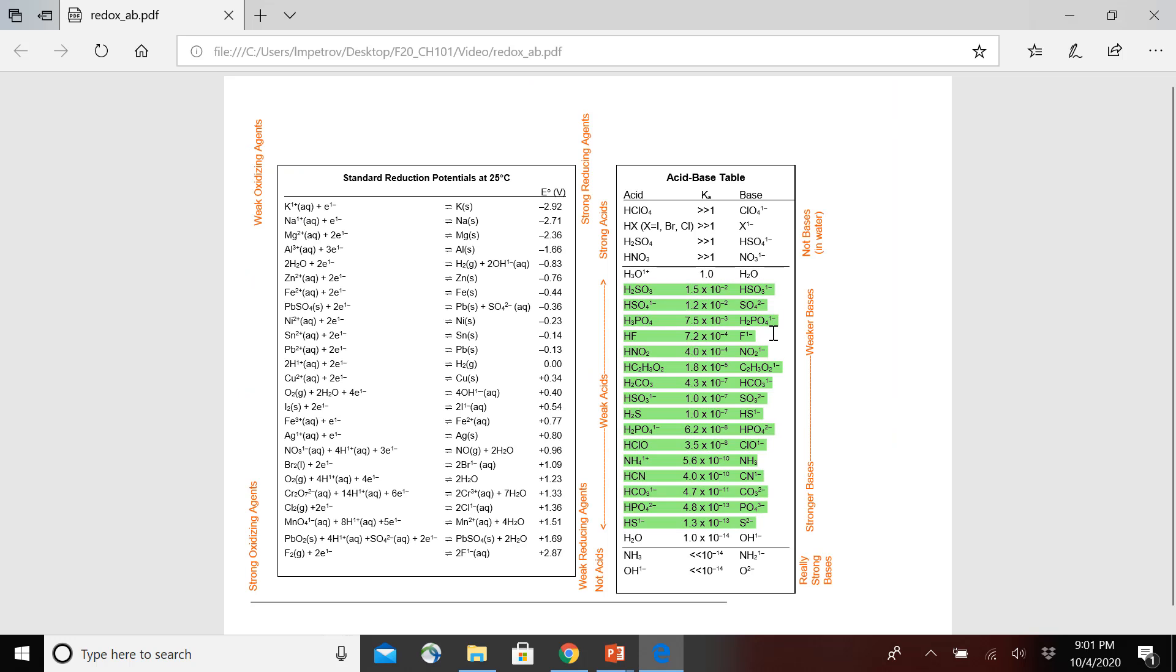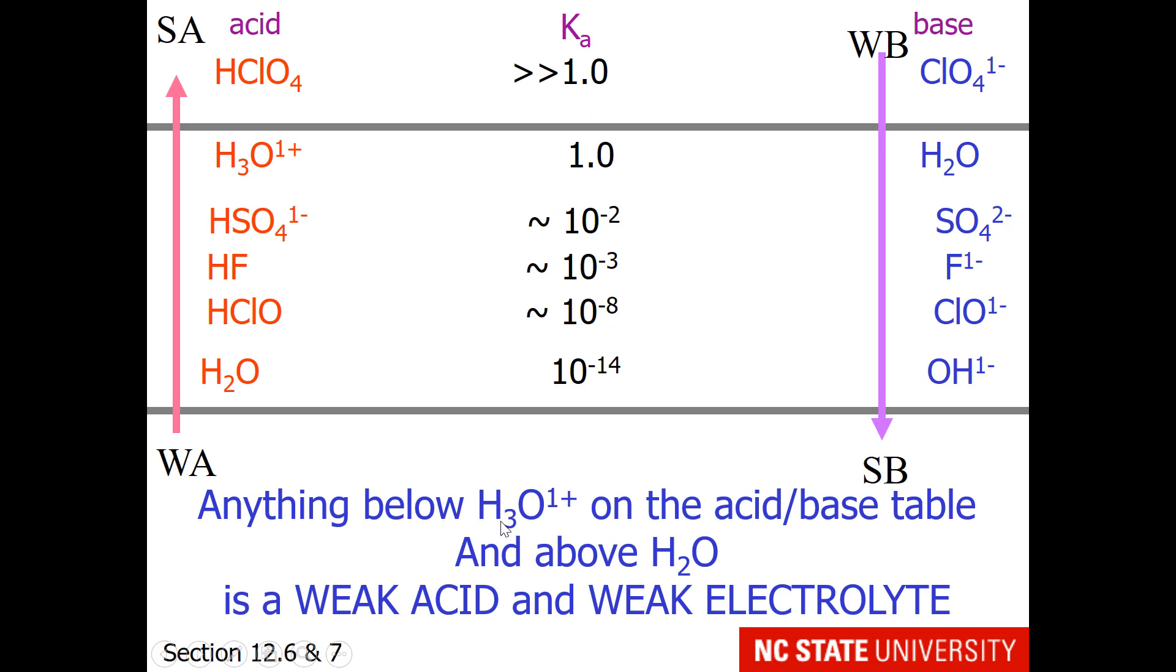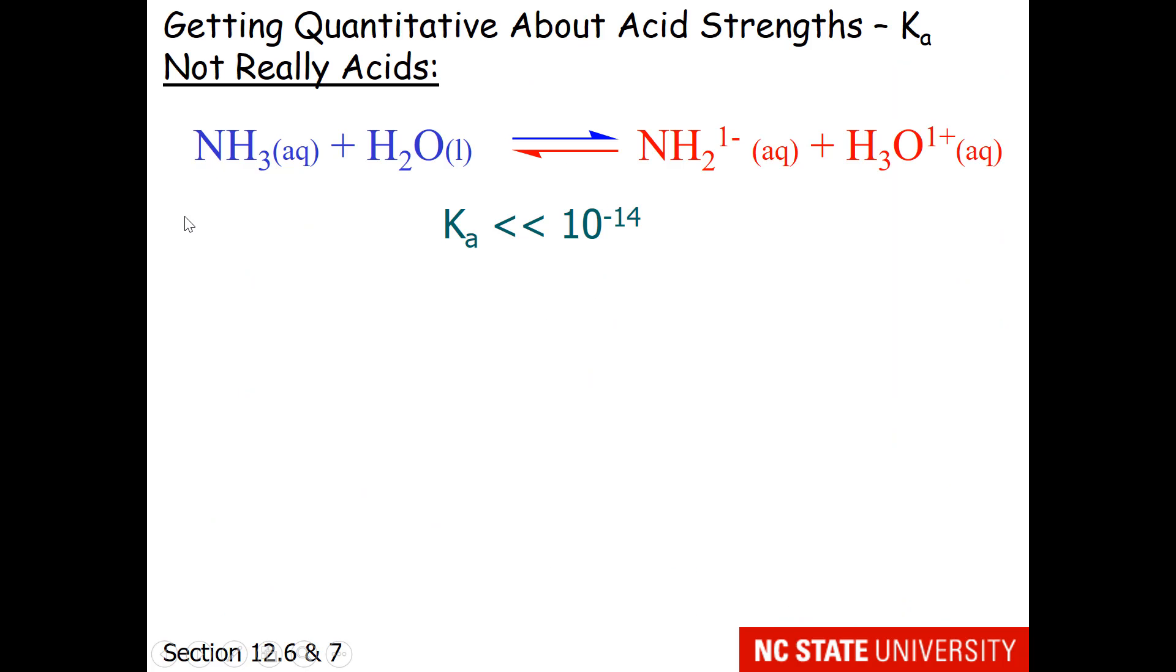These are going to have Ka values between just below 1 and just above 10 to the minus 14. So that would be these acids that I've highlighted right here. They're below hydronium and above water and exist as weak acids. So anything below hydronium and above water is a weak acid and a weak electrolyte.